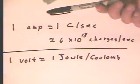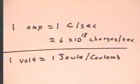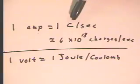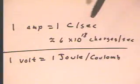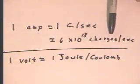Now, a one-amp current is defined as one coulomb per second. A coulomb is a number of electrons, essentially. A coulomb is roughly 6 times 10 to the 18th charges.